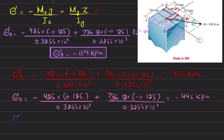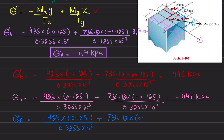The final stress is sigma_E: Mz = 425, point E is in the positive y-direction from the z-axis, so y = +0.125 m, divided by I = 0.3255 × 10⁻³, plus My = 736.12, and z is also positive at +0.125 m from the y-axis, divided by I = 0.3255 × 10⁻³. This gives stress at point E equal to +119 kPa.